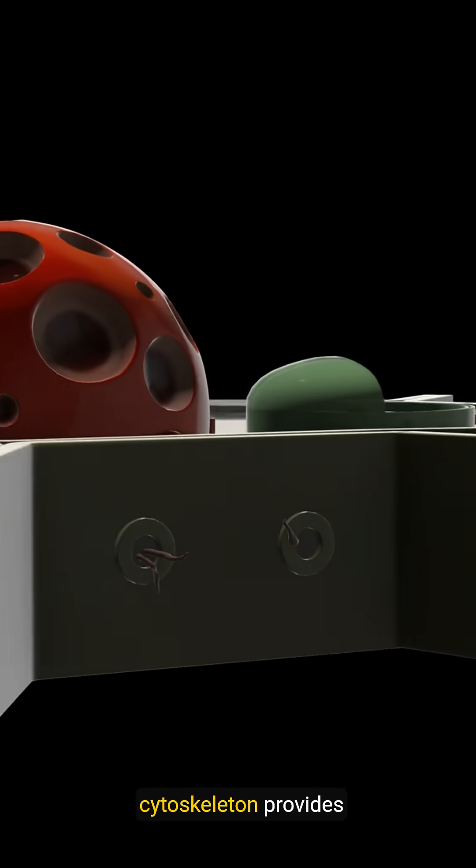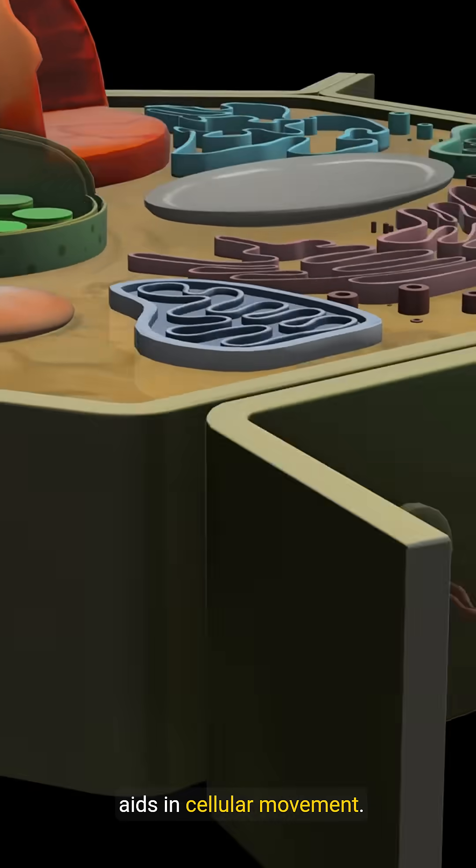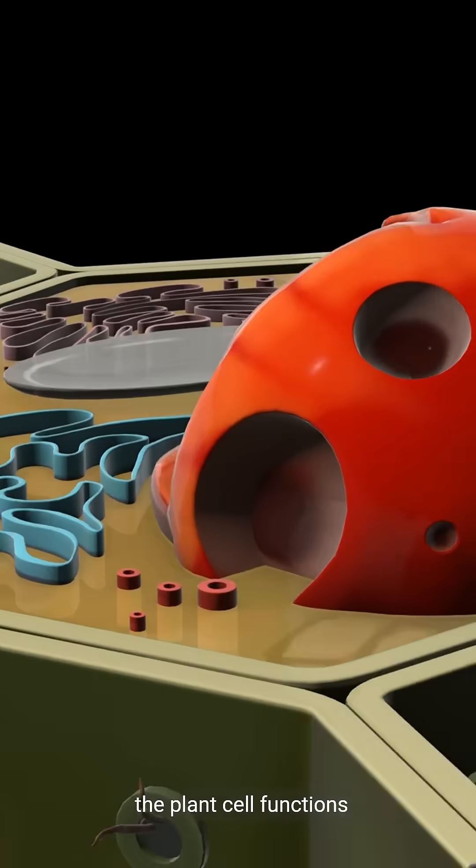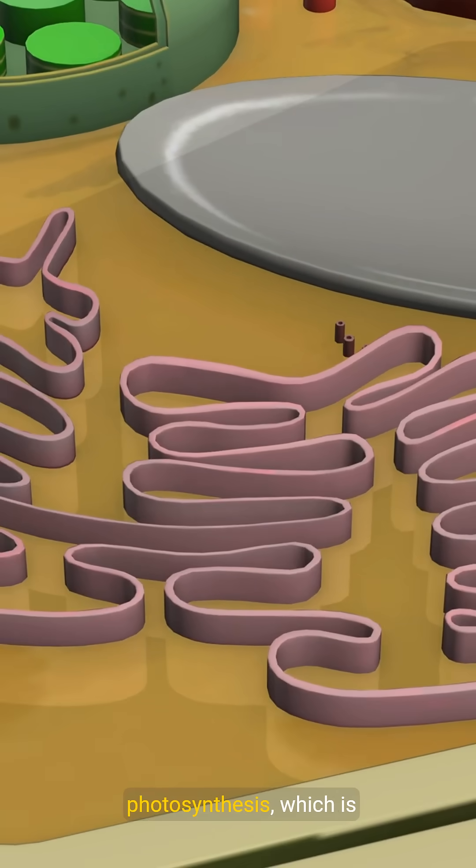Additionally, the cytoskeleton provides structural support and aids in cellular movement. Together, these organelles work in harmony to ensure the plant cell functions efficiently, supporting the plant's growth and its ability to perform photosynthesis, which is crucial for life on Earth.